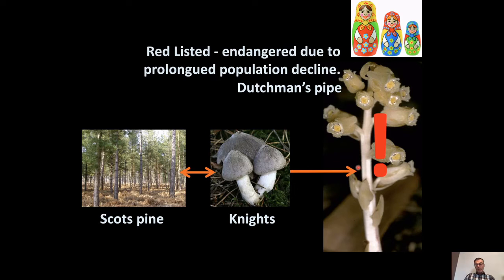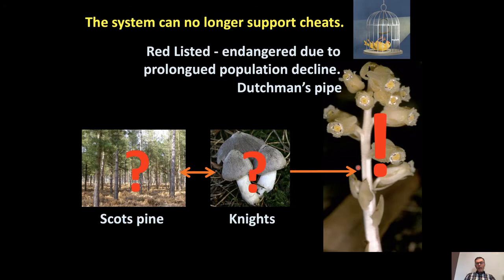Unfortunately, the Dutchman's pipe has declined quite precipitously in the UK, and in 2005 it became red-listed. What this suggests is that because this plant is so dependent on its interactions, perhaps the problem is actually in the fungi, or in the interaction between the fungi and the trees — this complex system no longer being able to support these cheats. You could think of it as a canary in the coal mine, sending us a signal that there is some problem in the system.